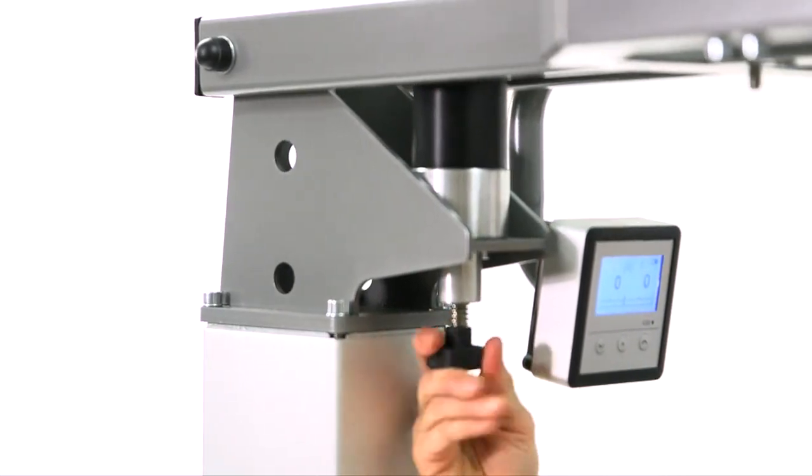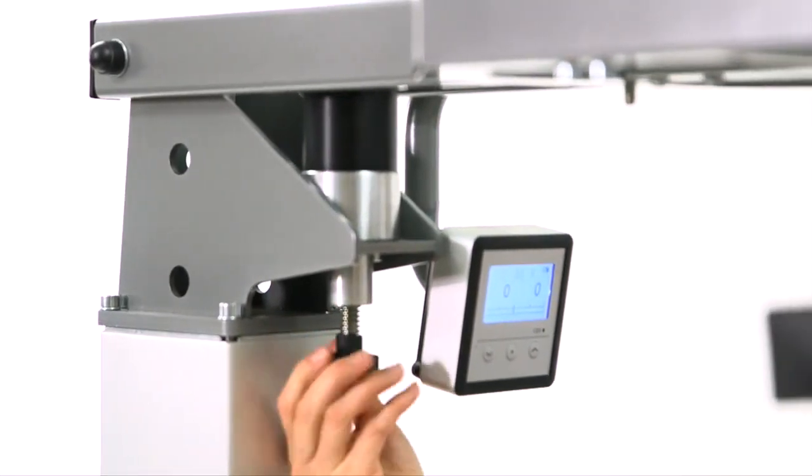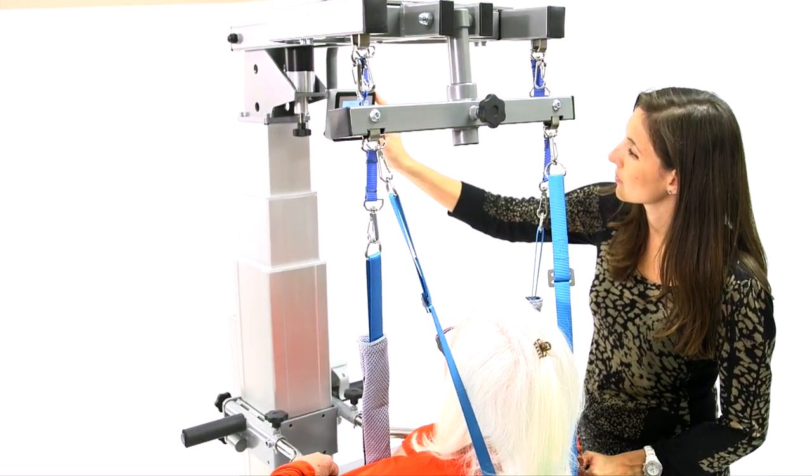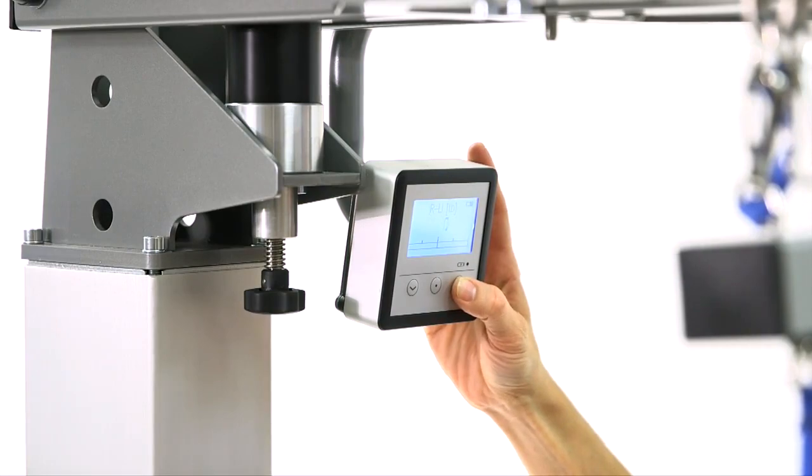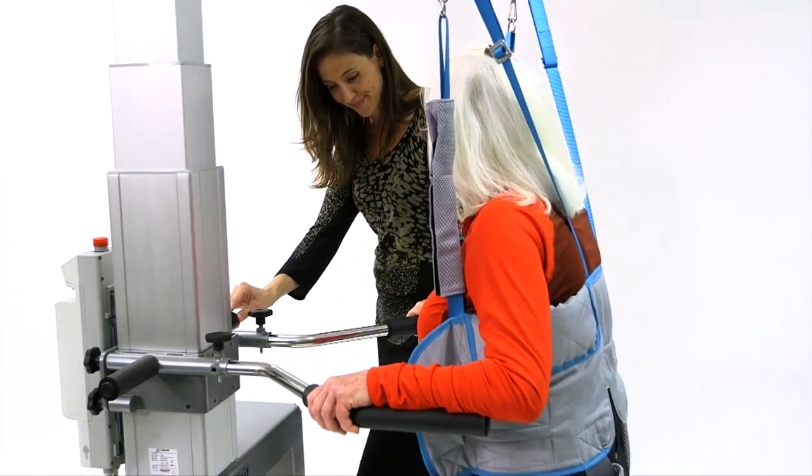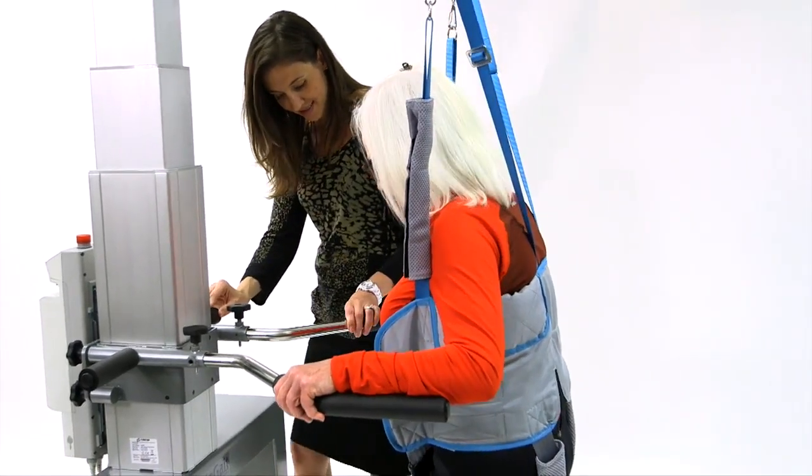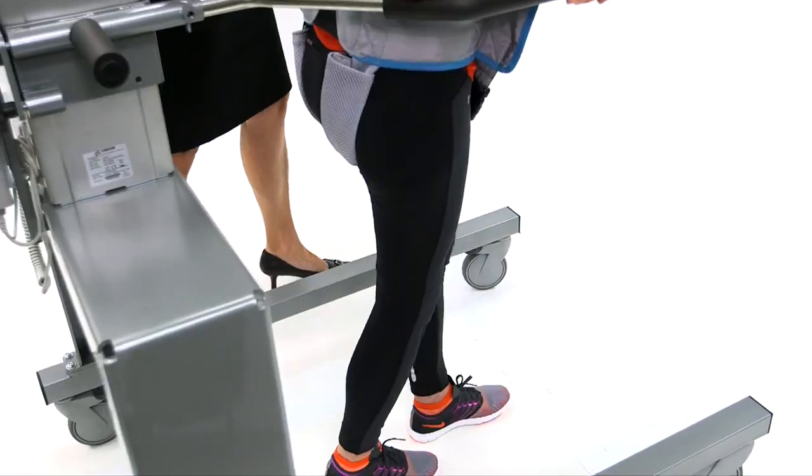Using the gait scale, the clinician measures uni- and bilateral gait displacement. The LCD gait scale has three modes: one displays total weight, two displays left and right weight, three displays differential weight between left and right side.